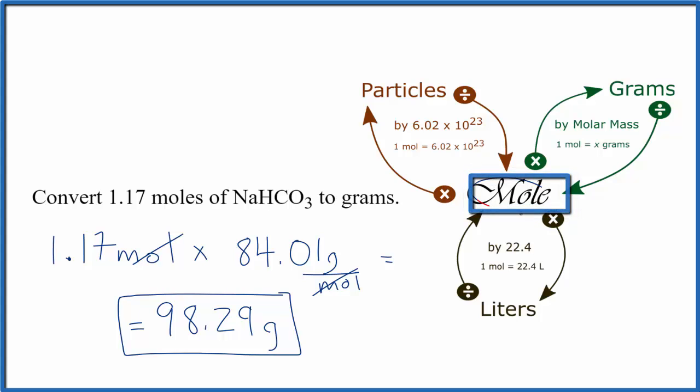So to recap, we started with moles, and we wanted to go to grams, so we multiplied by the molar mass to get grams of NaHCO3.